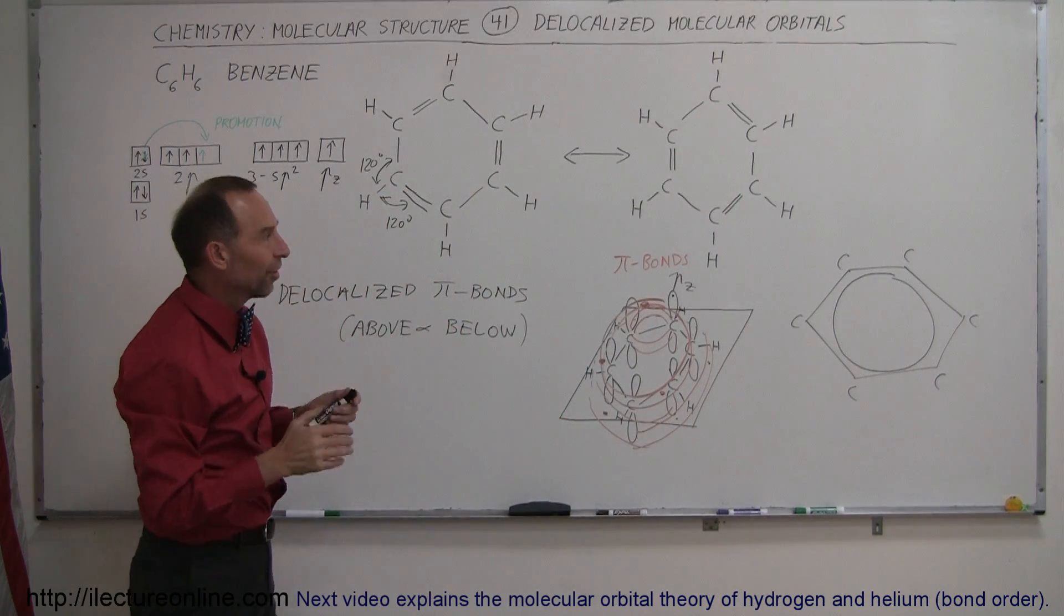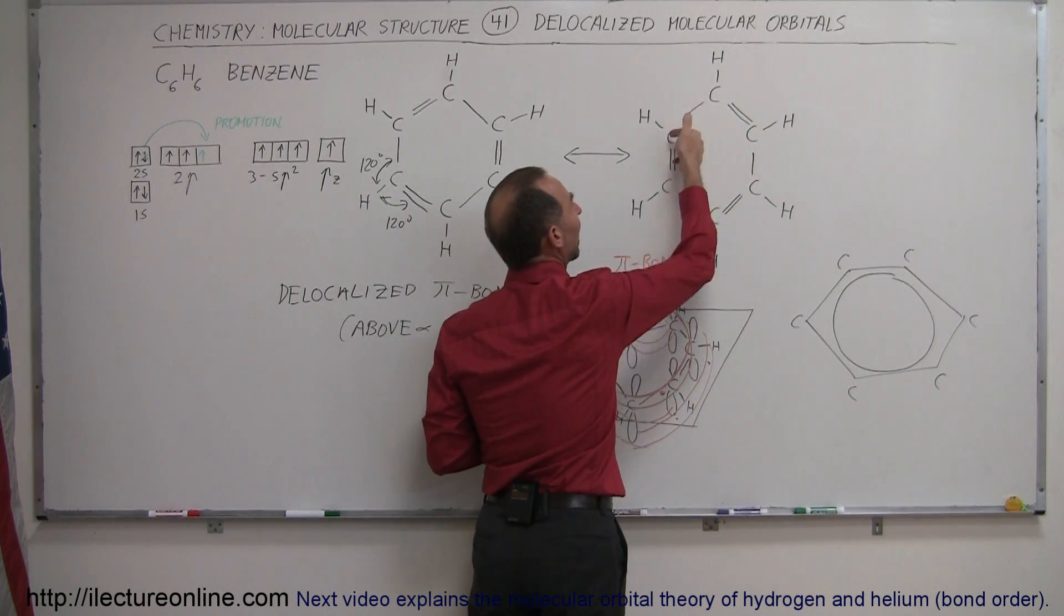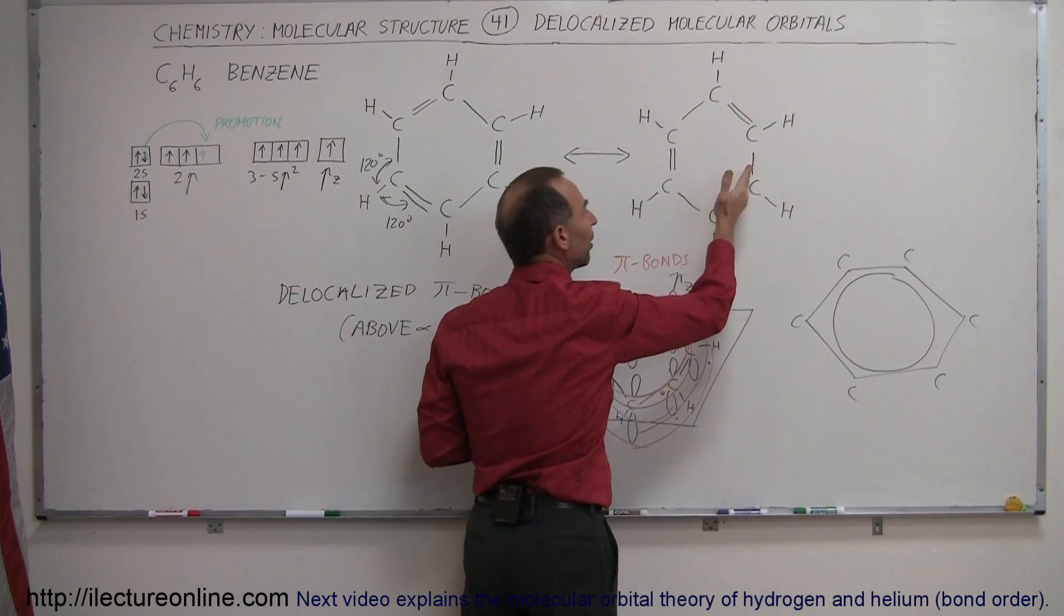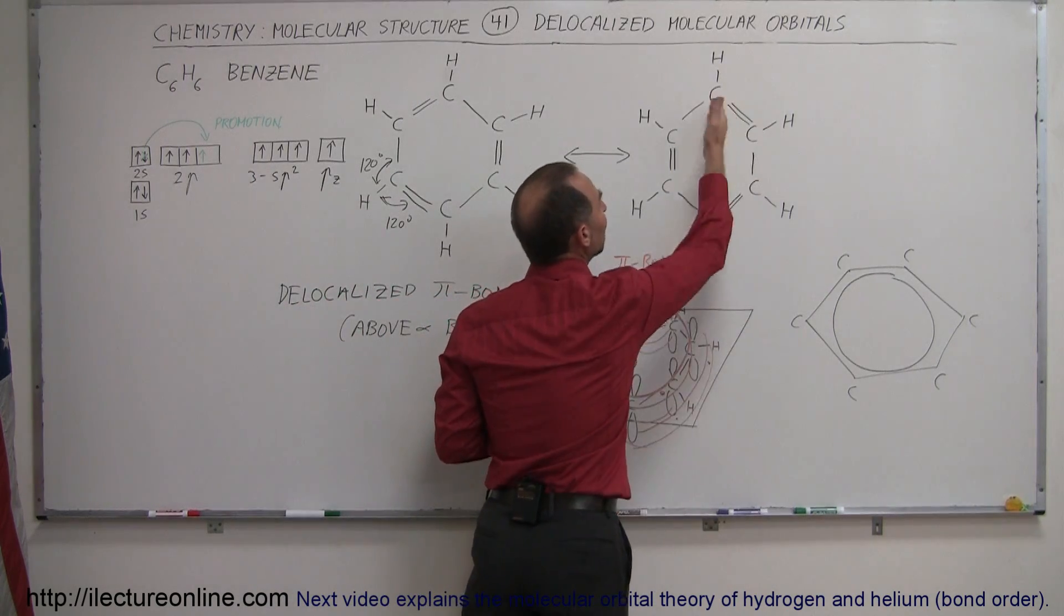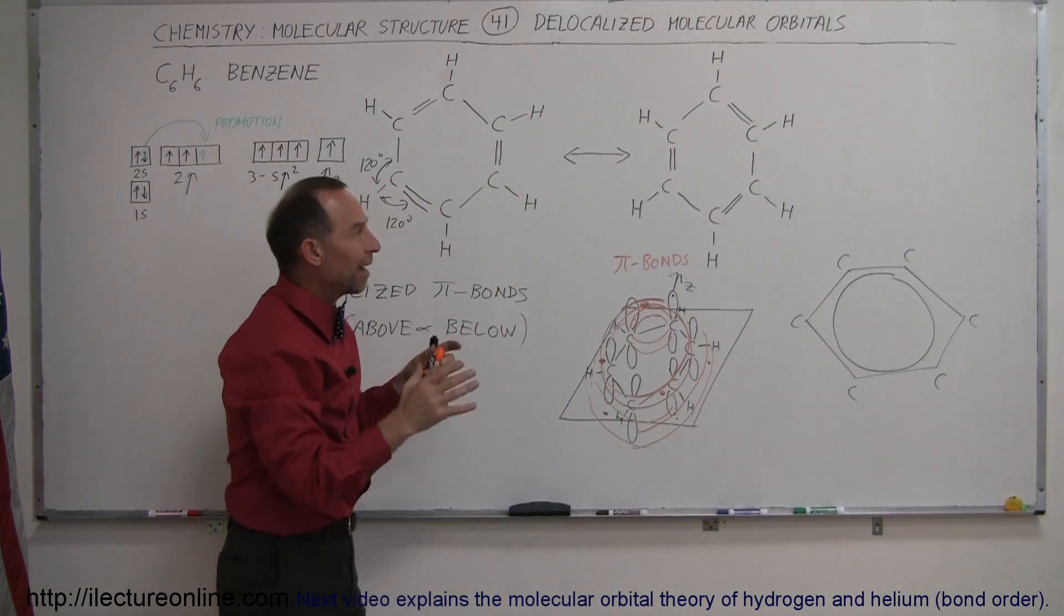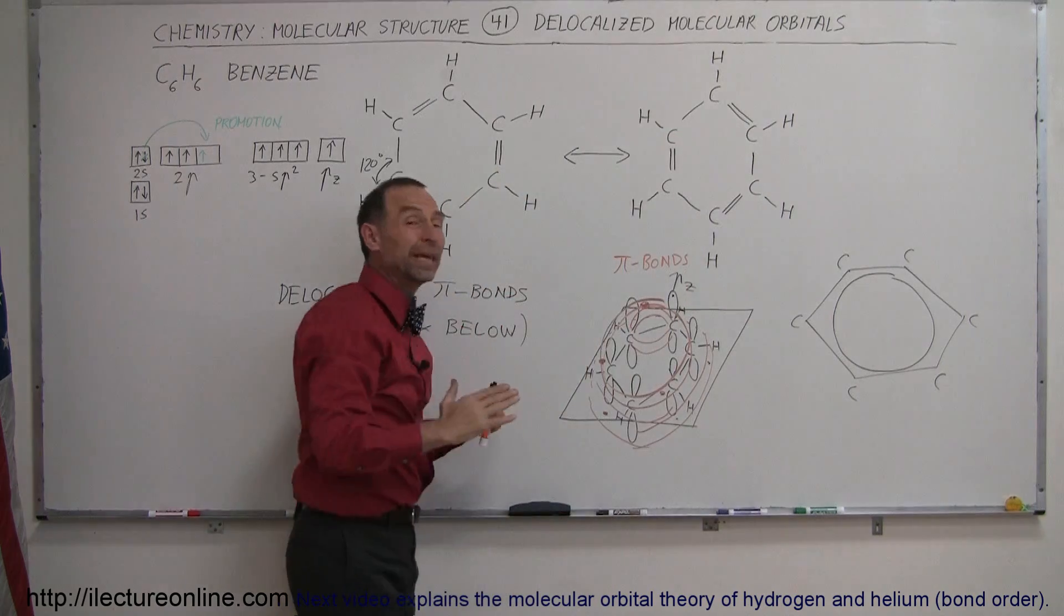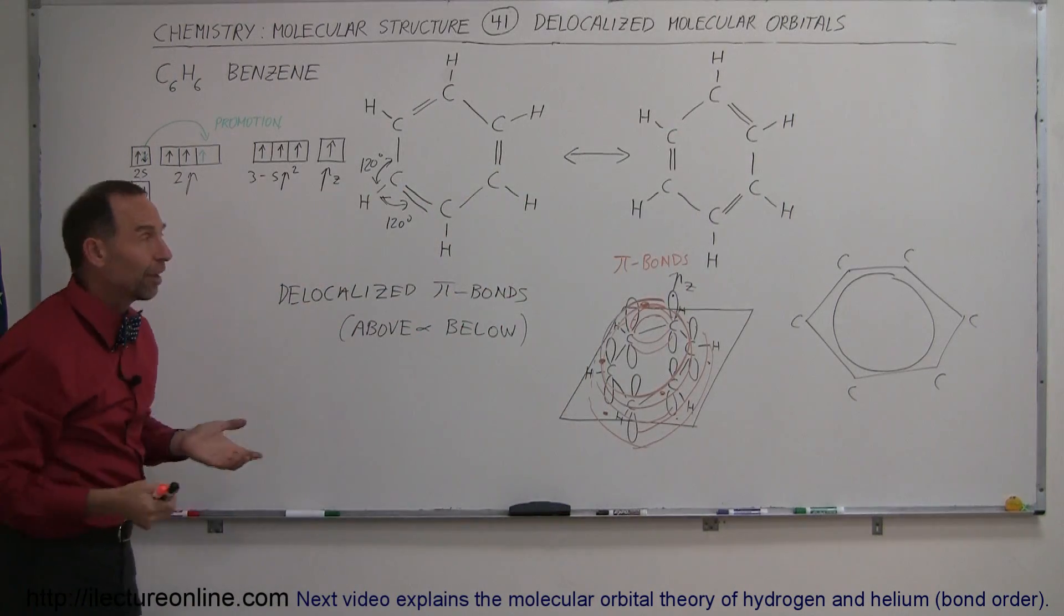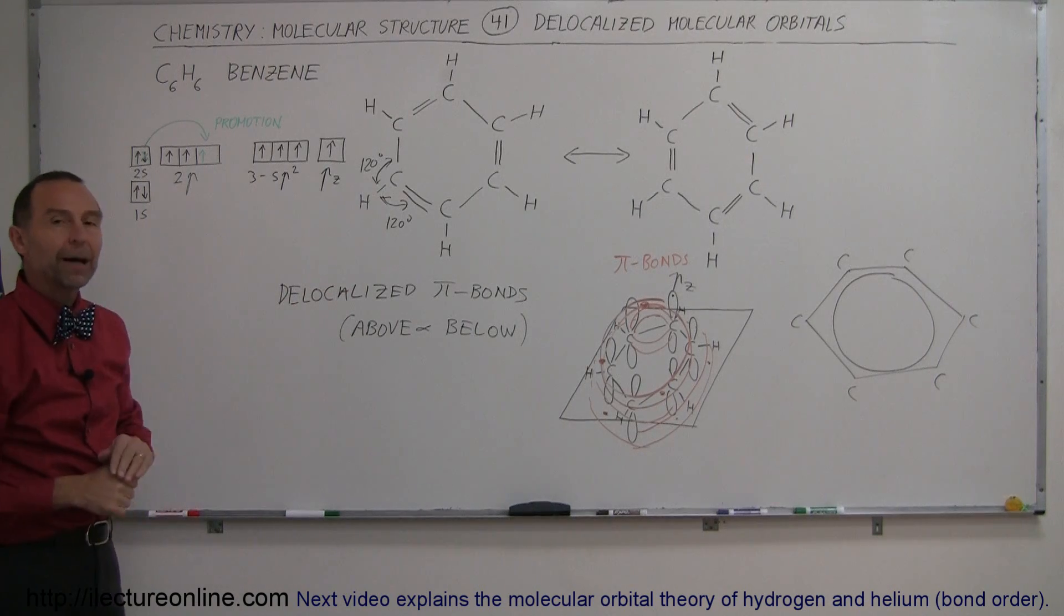So basically what you would think about is that on average you'd have one and a half bonds between each of the carbons. We have a sigma bond that is there, caused by the hybridized orbital, and then we have the ring-like structure, which basically forms an average of a half a bond between each of the carbons, which would be a half a pi bond. So on average you have about one and a half bonds between the carbons by the delocalization of the pi bonding.